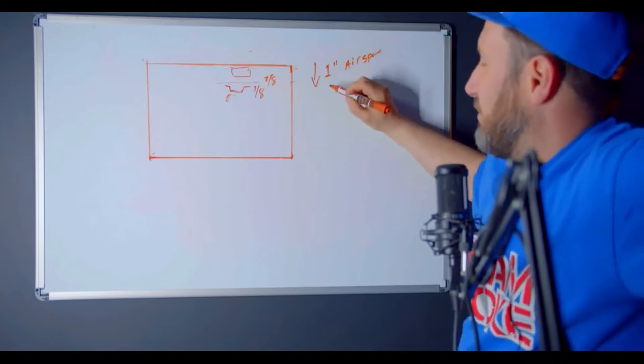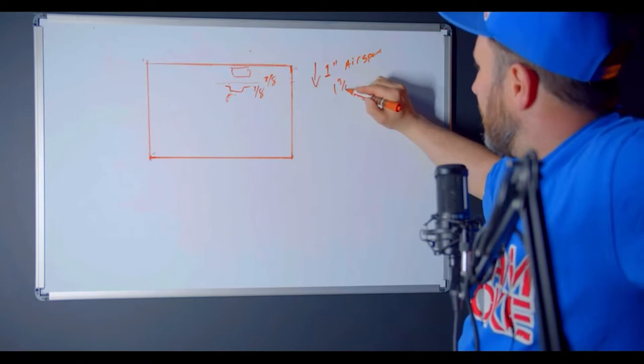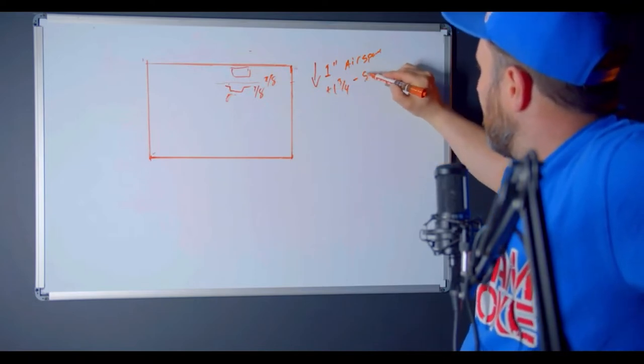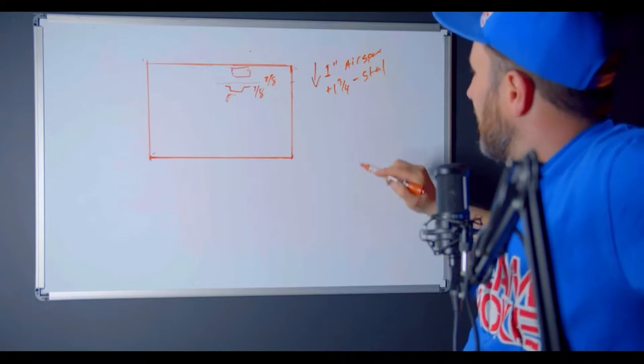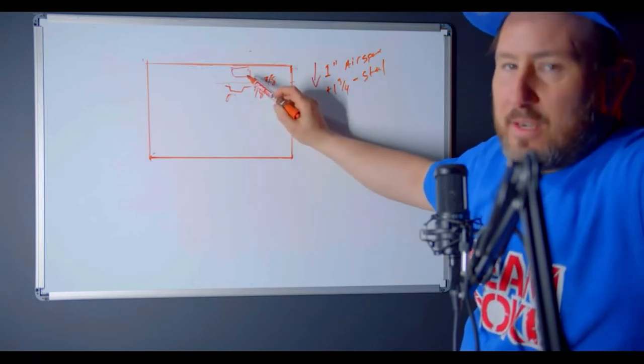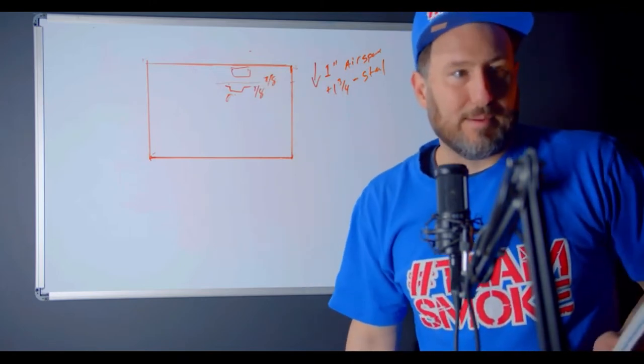So two inches, inch and three quarters, sorry, inch and three quarter for steel. So you're going to come down two and three quarter from the lowest duct. It's always the same.